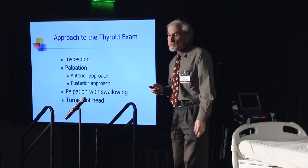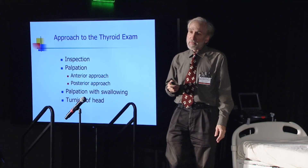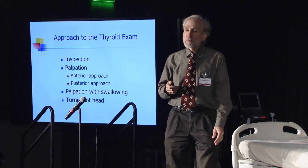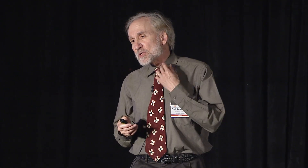Turning of the head is very useful. When you turn the head to the right, you expose the left lobe of the thyroid much more. When you turn the head to the left, you expose the right lobe much more. So if you think you have a unilateral abnormality, it's sometimes very helpful to go through the same maneuvers with the head turned to the left or right.